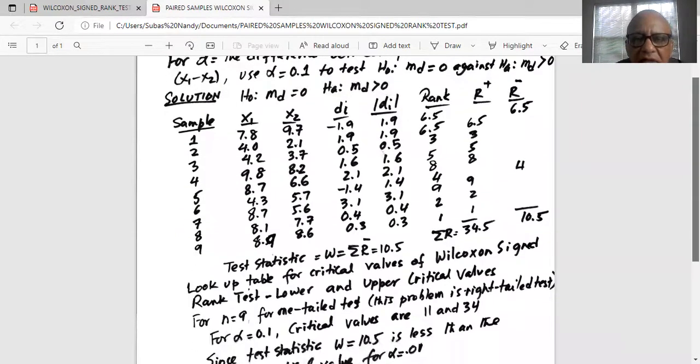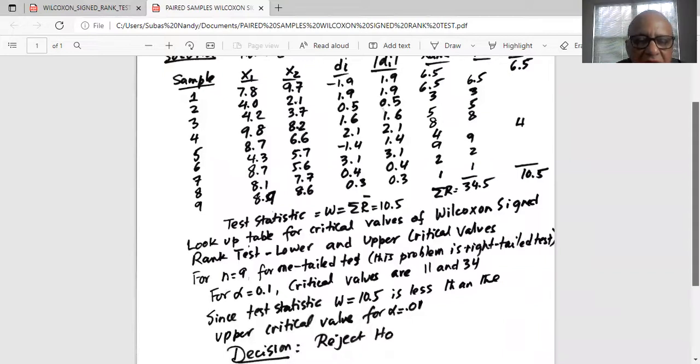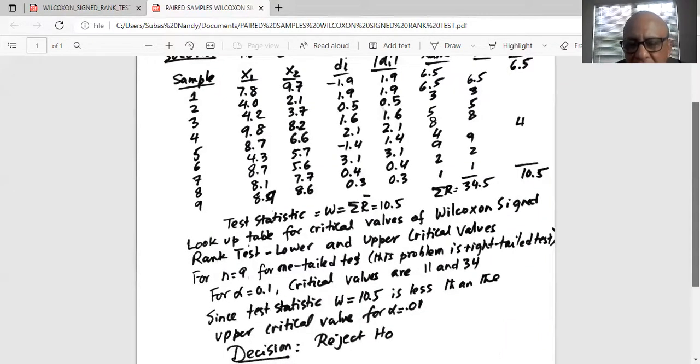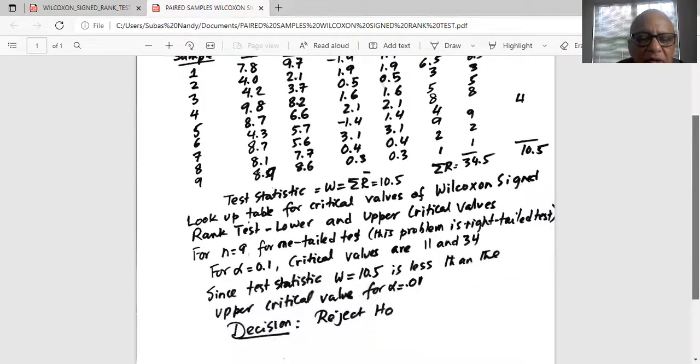Okay so now this is a right tail test, md greater than zero is the alternate. So the test statistic which is w equal to 10.5 is less than the upper critical value of 34 for n equal to 9, alpha equal to 0.1. Decision is reject H0.